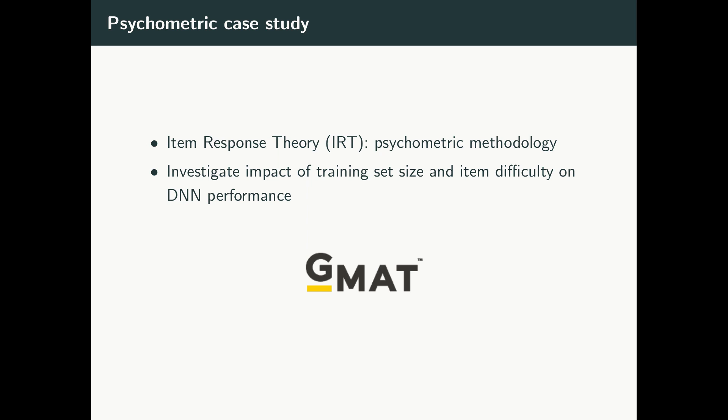In this paper we conduct a case study using psychometrics to investigate how both training set size and the difficulty of specific examples affect model performance. We utilize item response theory from psychometrics, a framework for estimating latent characteristics of test set questions called items and latent ability parameters of test takers who provide answers to the test questions. IRT is typically used in standardized tests like the GRE and GMAT and in prior work we applied it to building a new test set for the natural language inference task.